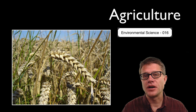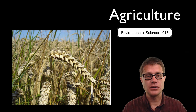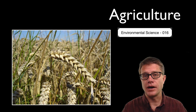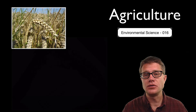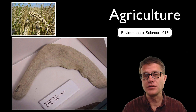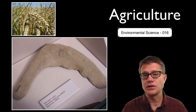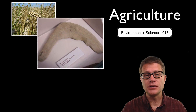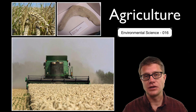Hi, it is Mr. Andersen and this is environmental science video 16. It is on agriculture. This is a picture of wheat. We grind it to make flour and then make things like bread, and we have been doing so for thousands of years. This sickle is over 5,000 years old and was used to harvest wheat. We still harvest wheat today in a similar fashion, but now on an industrial scale.